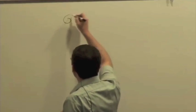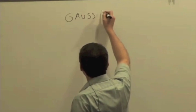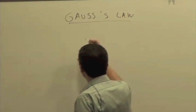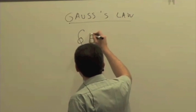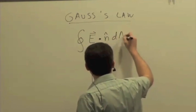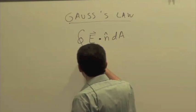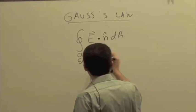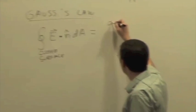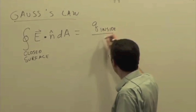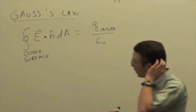So, just a reminder of what we've been talking about. We've seen this principle called Gauss's Law. The most formal expression of it is the closed integral of E dot n hat dA over a closed surface being equal to the charge inside that closed surface divided by constant epsilon naught.